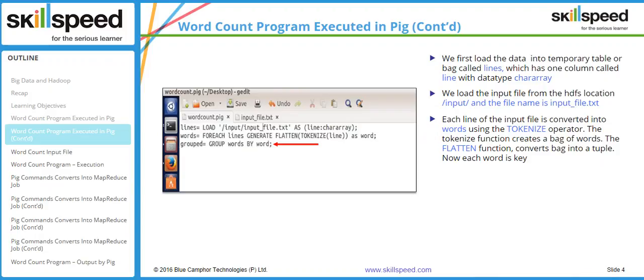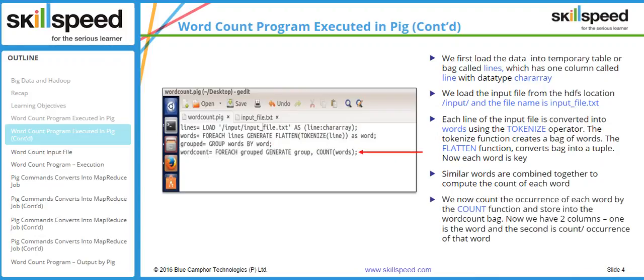It is a grouping operation where similar words are combined together to compute the count of each word. I am using the COUNT operator which is built into Pig. I am defining a new relation called 'word_count', then for each element in the previous group relation I generate the group and the count of words. The last line uses the DUMP operator to output the result.